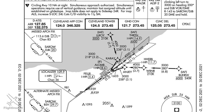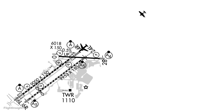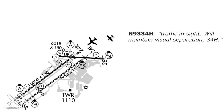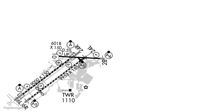When we're on a visual approach, we as pilots assume responsibility for traffic separation and obstruction clearance that ATC usually handles under IFR. At Cleveland Hopkins, they may be conducting parallel approaches with jets landing on 24 right and us on 24 left. As a fast mover comes up to overtake us on 24 right, the tower calls out: Cessna 34 Hotel, traffic is an Airbus A320 on the parallel approach, report in sight. We reply: traffic in sight, will maintain visual separation, 34 Hotel. ATC comes back approved. We need to confirm we have the aircraft in sight and will maintain visual separation — meaning we'll do our very best not to hit it. ATC still has other separation requirements to follow, such as wake turbulence separation, and they can't let us maintain visual separation with a super heavy like an A380.